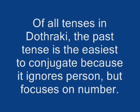Grammar time. Of all the tense conjugations in Dothraki, conjugating in the past tense is the easiest because you don't have to conjugate by person, but only by number. That means the conjugation for I, he, she, it, and you are all the same, because we are referring to only one person or entity. This also means that the past tense conjugations for we, you guys, and they are the same, because they refer to two or more entities or persons.